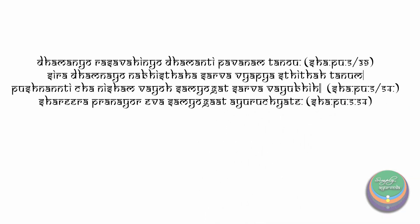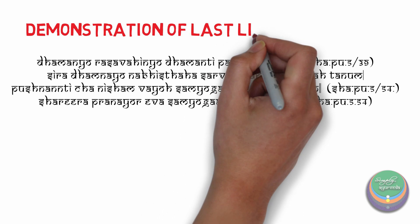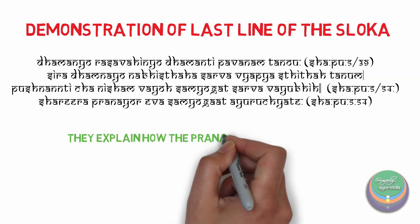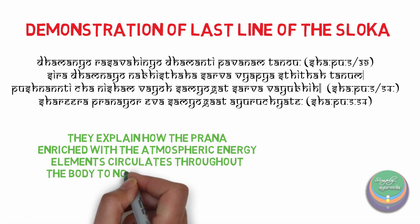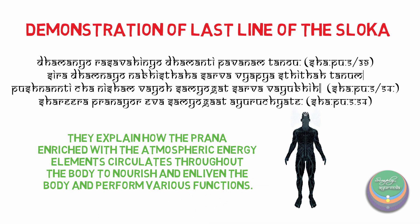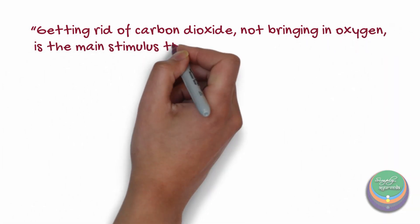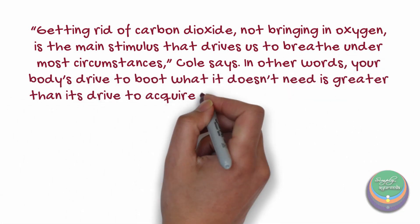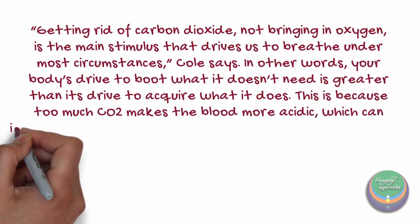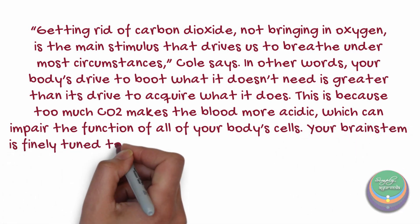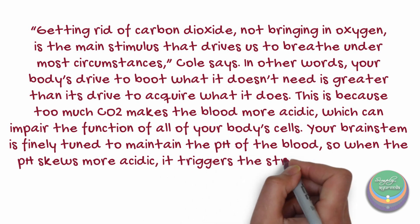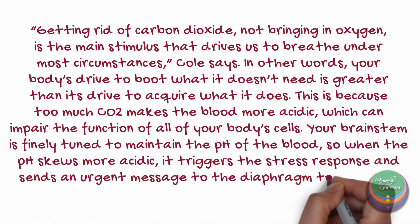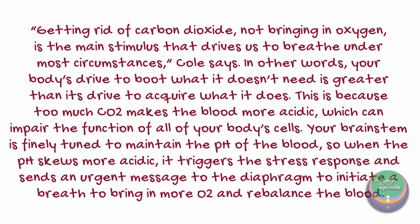The above verses establish the last line of Acharya Sharangdhara's sloka. They explain how the Prana, enriched with the atmospheric energy elements, circulates throughout the body to nourish and enliven the body and perform various functions. Now the whole process explained by Acharya Sharangdhara, added on with the concepts from Siddha and traditional Chinese medicine, makes sense. Do you now realize why Acharya Vagbhata mentioned Uchvasa first before Nishvasa?